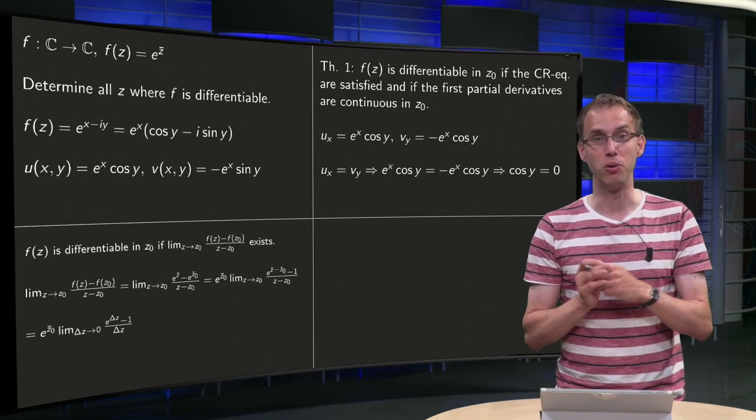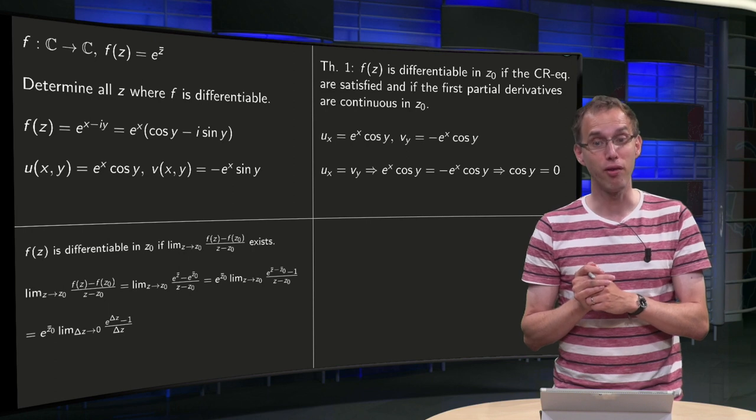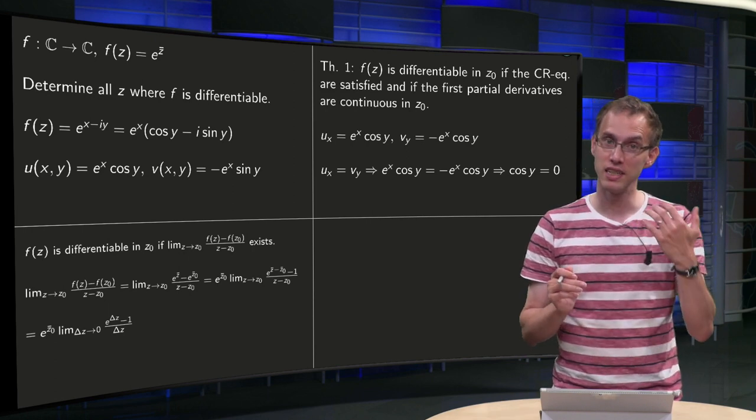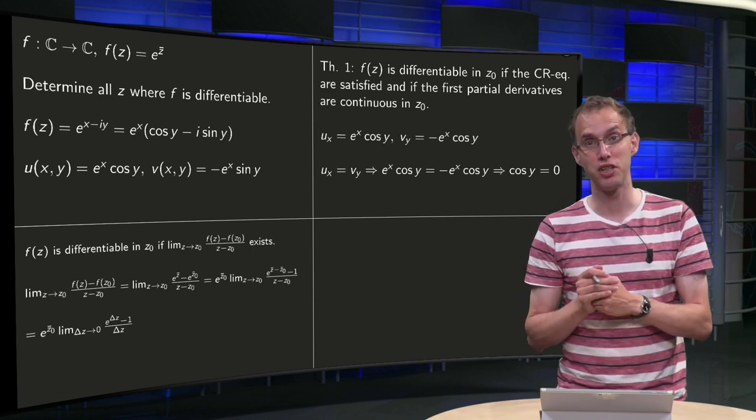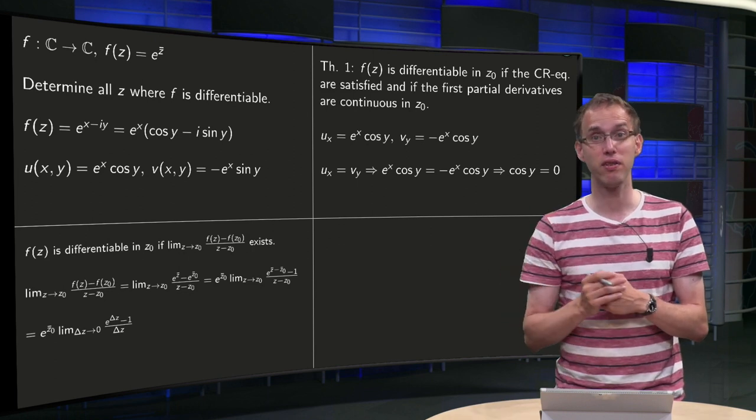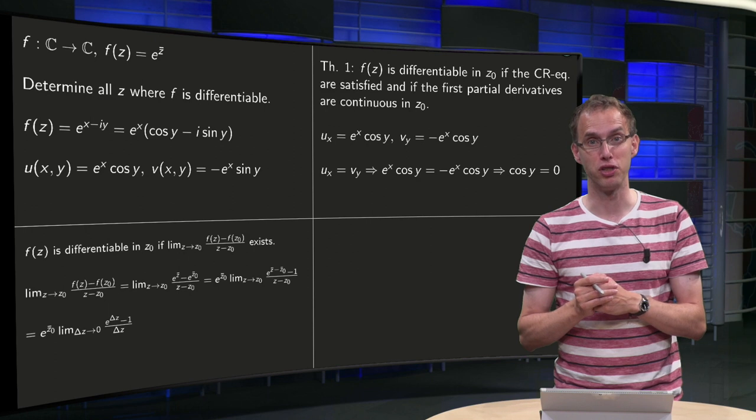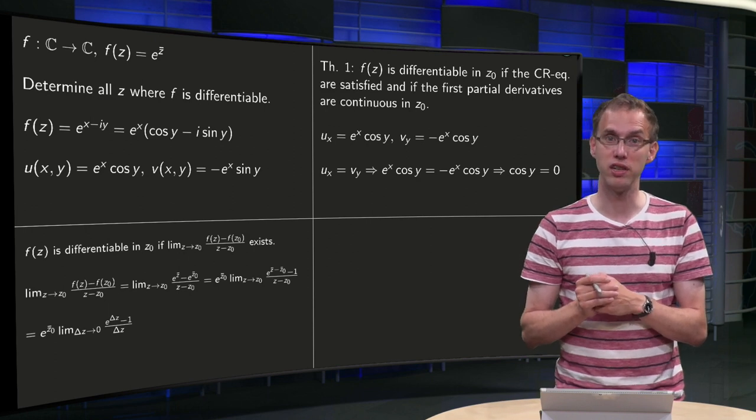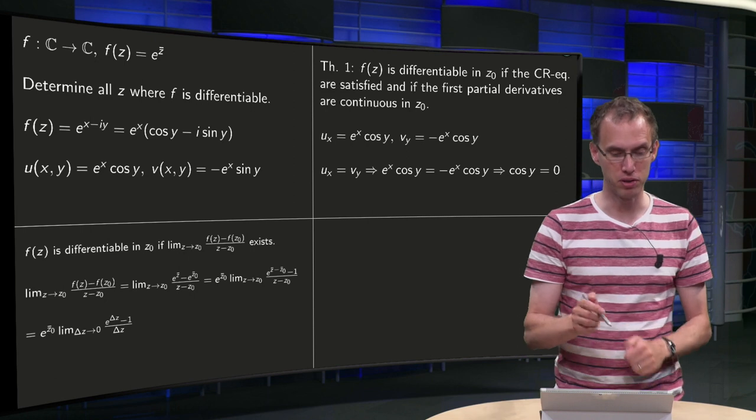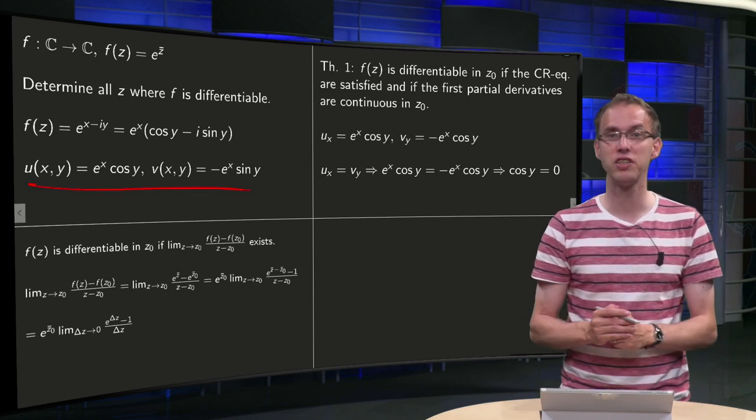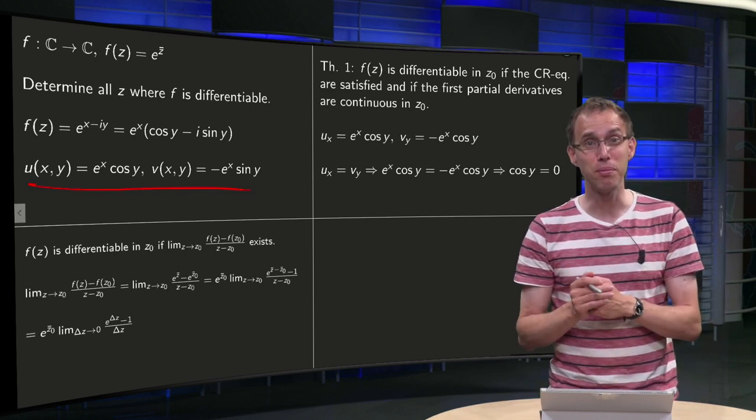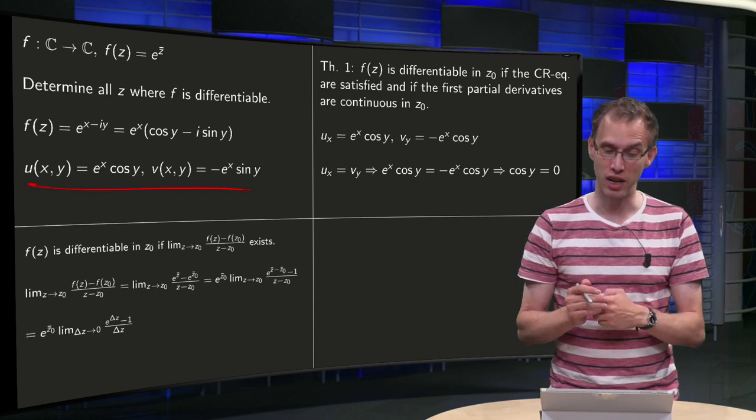So what are we going to do? Because the limit is difficult, however we can use a theorem that says f(z) is differentiable in z₀ if the Cauchy-Riemann equations hold in z₀ and if the component functions are continuously differentiable. Well the second part is fine, because our components are really nice, but what about the Cauchy-Riemann equations? Let's try.